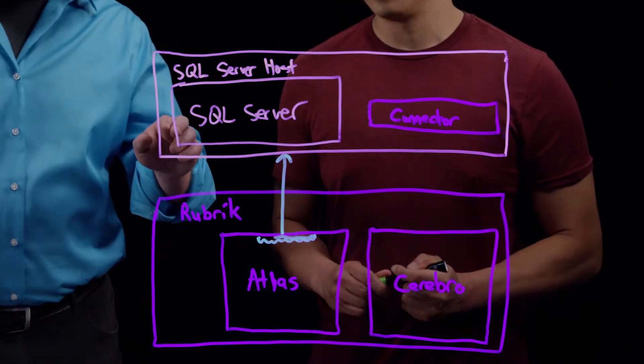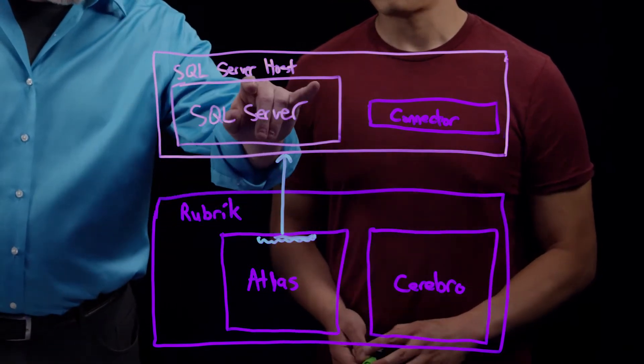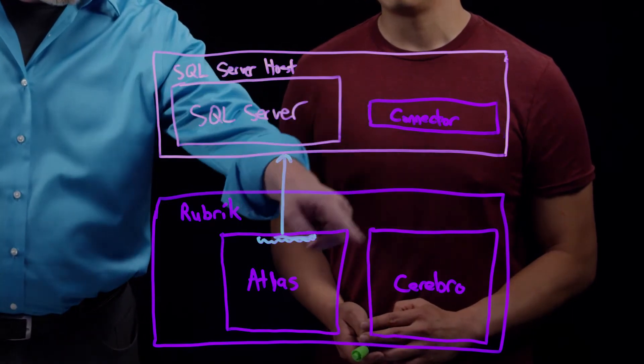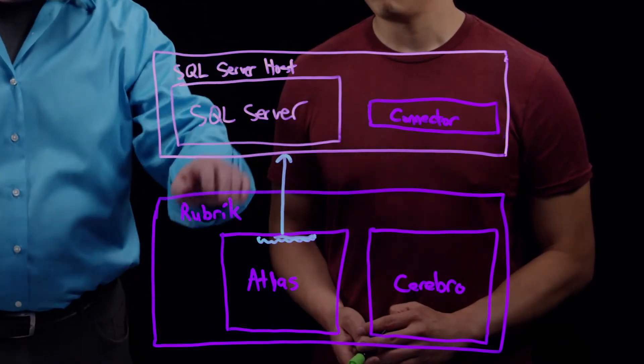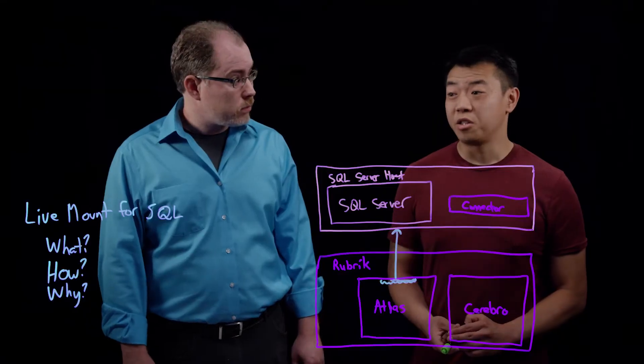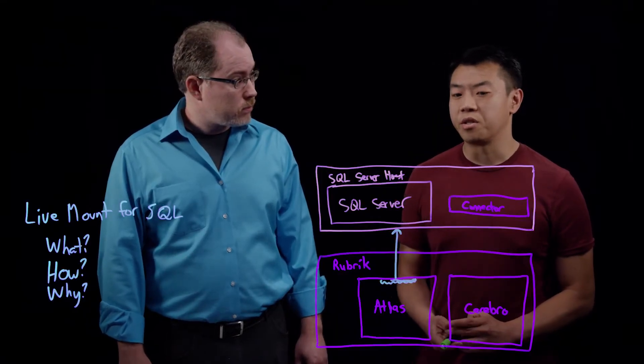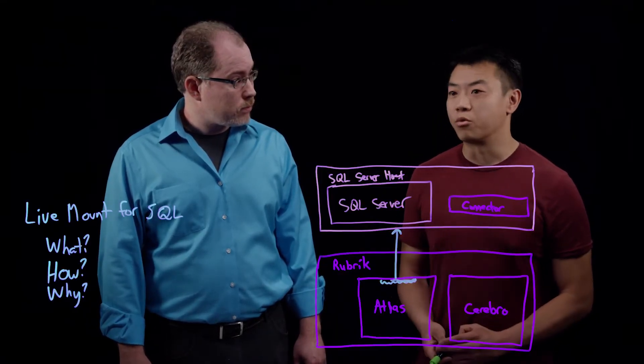So let me make sure I understand. If you're backing up your SQL databases with Rubrik, what do you need to do in order to use this feature come upgrade to 4.0? You don't actually have to do anything. This is just a feature that's available if you're backing up your SQL database with Rubrik. And that is exactly the point.